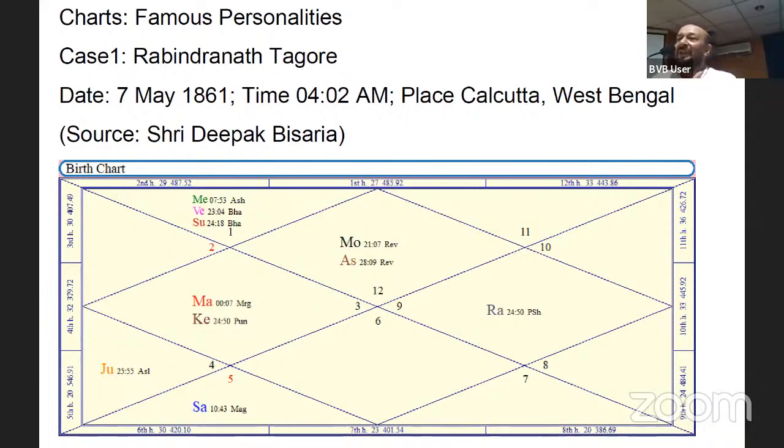The charts that we need to look into are of course the D1 promise, and a certain promise that whether that is going to fructify through D9 where you see the power of the planets, D24 which is for knowledge, D60, and of course a few of the houses. So again, D1, D9, D60 and D24.